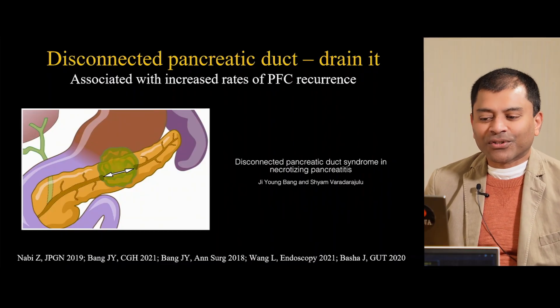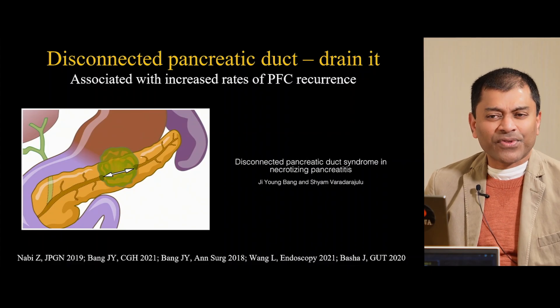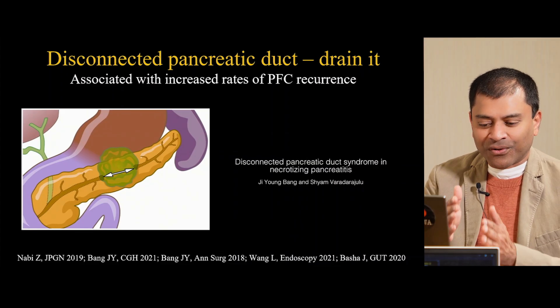The next issue mentioned several times is the disconnected duct — something I never fully understood. In order to form a fluid collection, there's always some interruption or leakage of the duct. A real disconnection means there's a distal end which is disconnected and drains into the cyst. It's utterly difficult to diagnose this reliably. We have a cartoon showing a classic example of a disconnected duct. Generally this happens in the genu of the pancreas — the watershed area — where there is decreased vascular supply. During a bout of necrosis, the pancreas is disconnected.